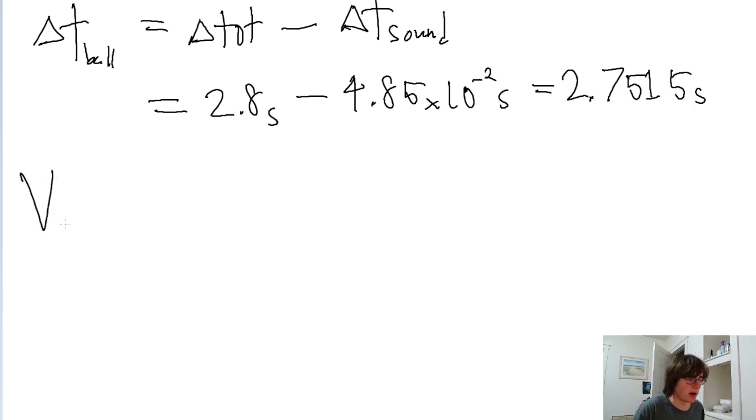So if we want to find the speed of the ball, we'll take the length of the lane and divide it by that time period. So 16.5 meters, the length of the lane, divided by the time it took for the ball to travel down the lane.